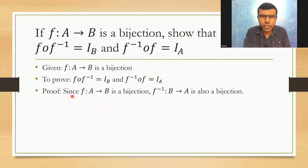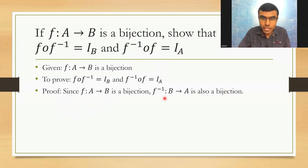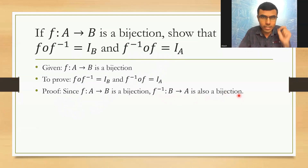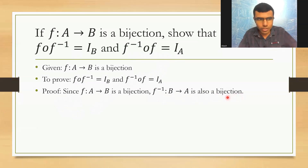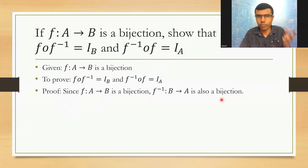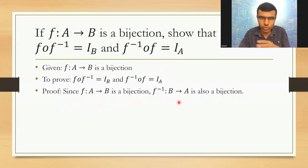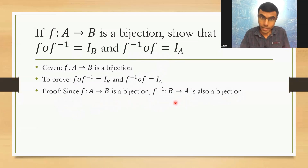Since F maps A to B is a bijection, F⁻¹ maps B to A is also a bijection. This is one of the theorems which was proved previously in the textbook, so we are using it here.